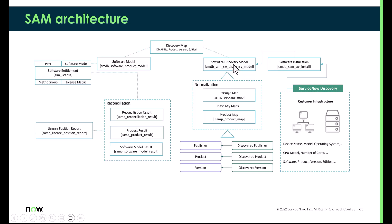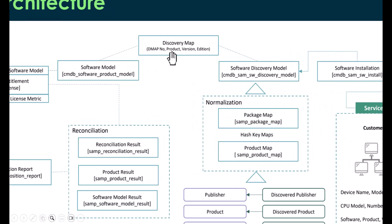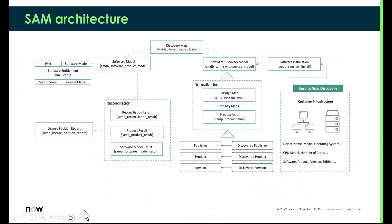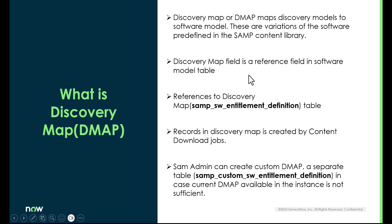On one hand we have the authorized software models, and on the other hand we have the discovery models. The connection from software model to discovery model is created by the Discovery Map — specifically the product, publisher, version, edition, etc., which get auto-loaded when we use DMAP. It is basically a reference field in the software model table, and the field name itself is Discovery Map, which references the Discovery Map table.